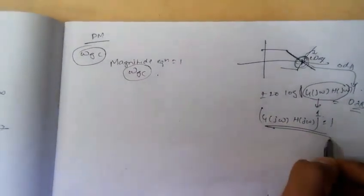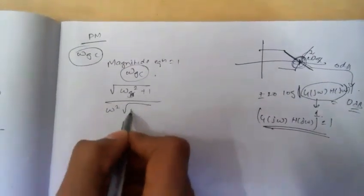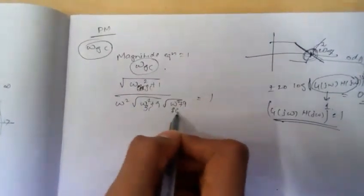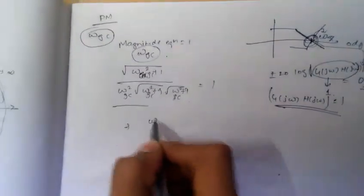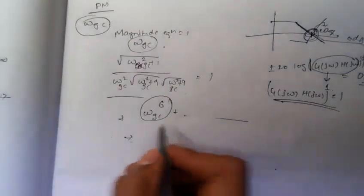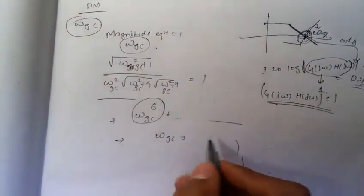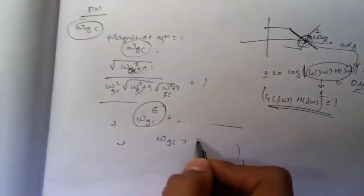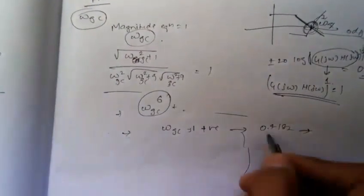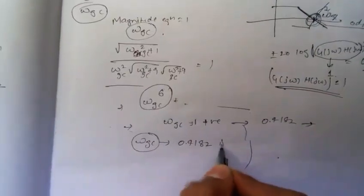If you equate this to 1, the corresponding frequency is Omega GC. And if you solve this, it is a very complex equation — you get an equation of order 6, resulting in up to 12 values. But you get only one positive value, and that positive value is approximately 0.4182. Only positive values are considered for frequency, and hence only Omega GC equal to 0.4182 is valid in this case.